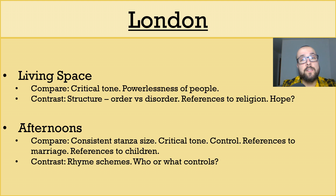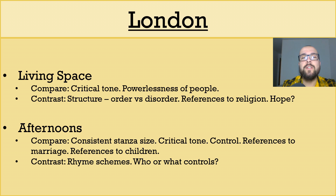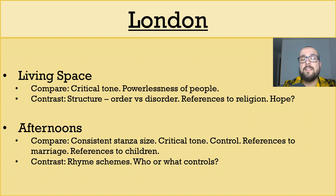If you wanted to contrast these poems, you could look at how rhyme is used. The rigid rhyme scheme in Blake's poem could reflect the amount of control that the city, or those who are in charge of it, exerts on its residents. The lack of rhyme scheme in Afternoons could indicate that, although the people in this poem are powerless, there is nobody in particular who is controlling them, and their fate is more natural and organic.